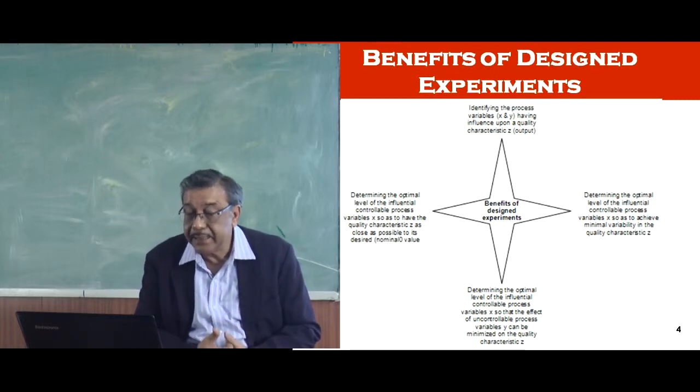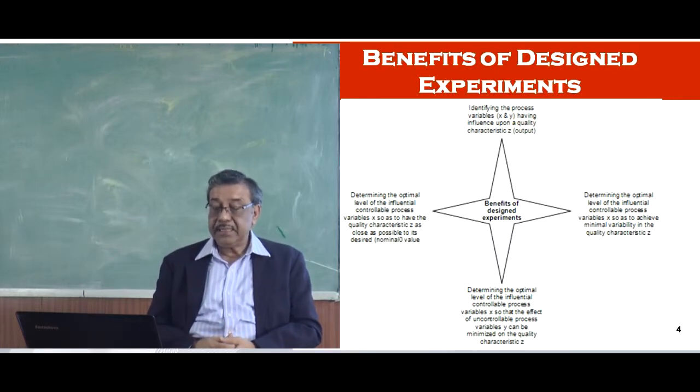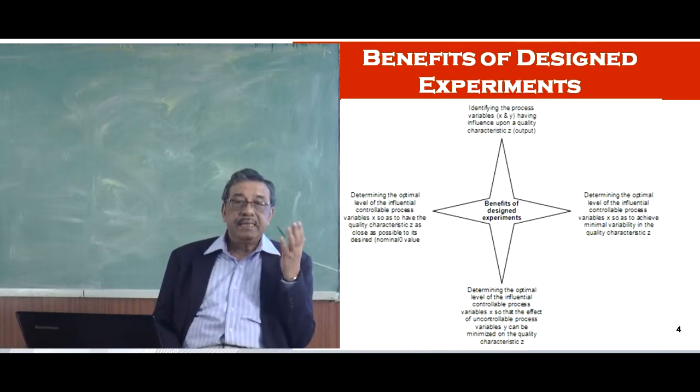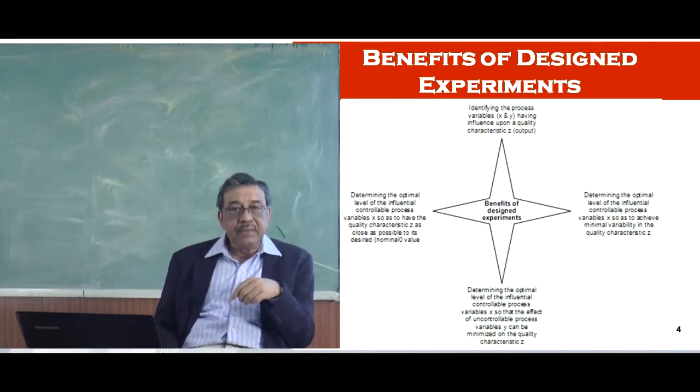Let us go back to this slide and go back to 6 o'clock position where it is determining the optimal level of influential control process variables x so that the effect of the uncontrolled variables y can be minimized on the quality characteristic z. What we are saying here is that we will try to control x or the control variable in such a way that even if there is some variation in the uncontrolled variable y you would be able to get the same result in z. You are minimizing the effect of variations in the uncontrolled variable. This is another aim of the experiment which you will see how we are getting there.